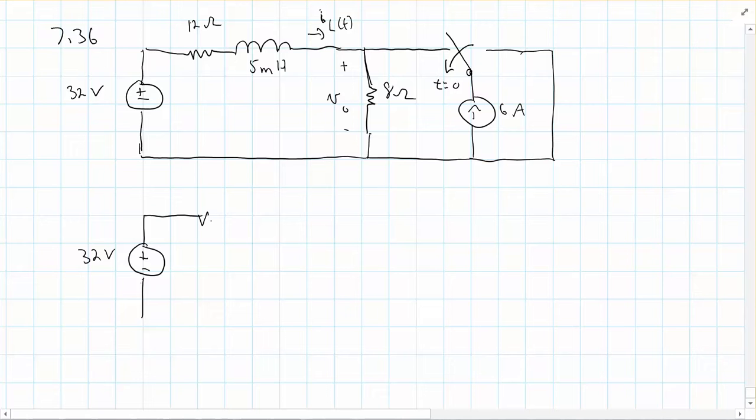Because the switch has been in this position for a long time, we know that the inductor behaves as a short. So this is for t less than 0. And this is 12 ohms, and this is 8 ohms.